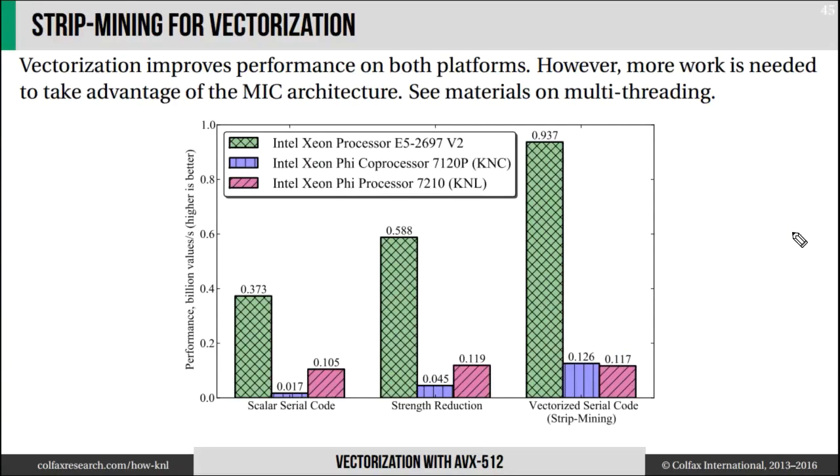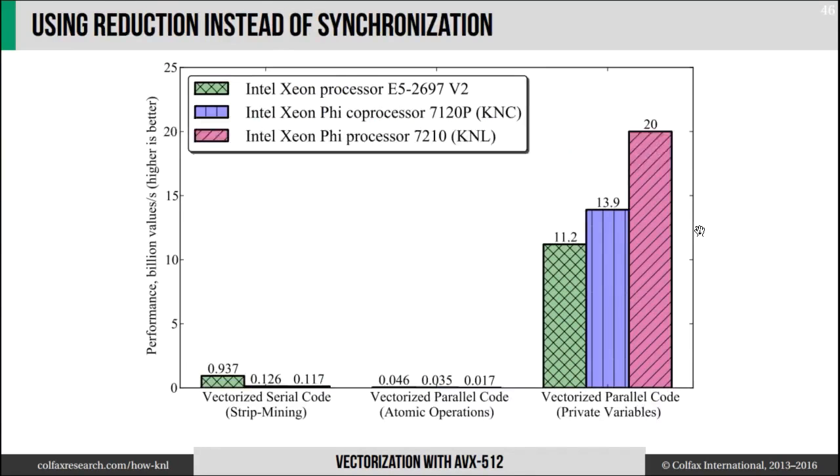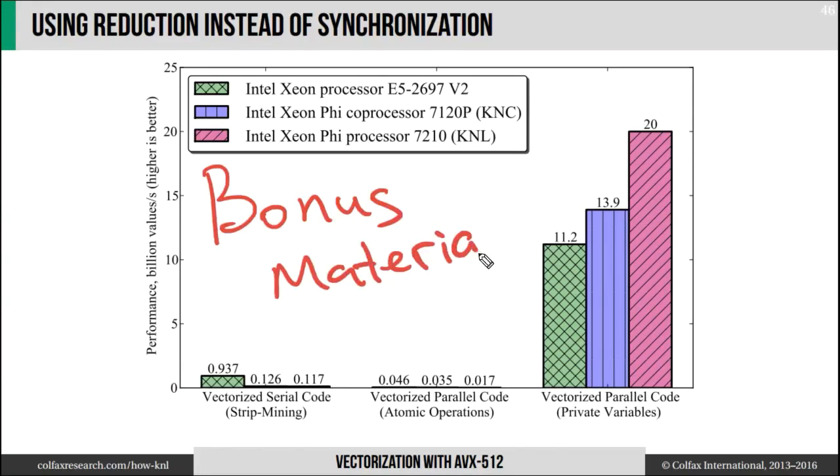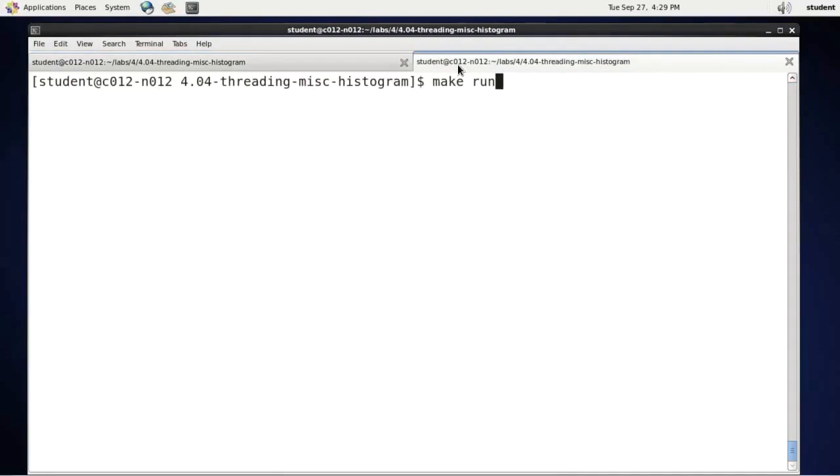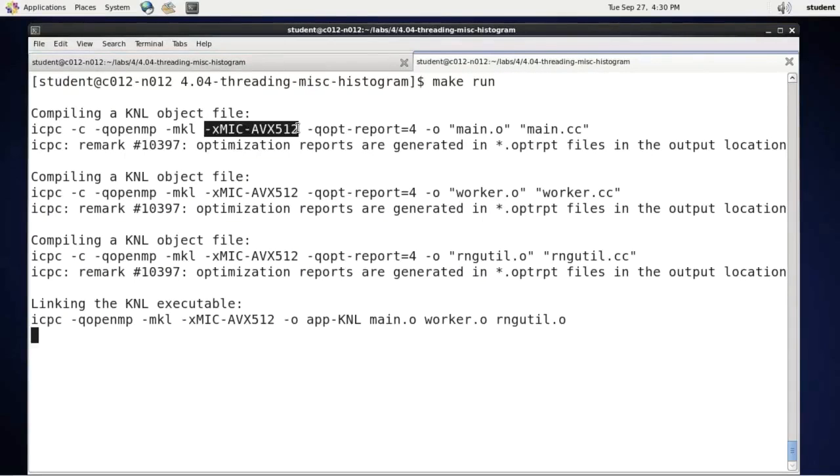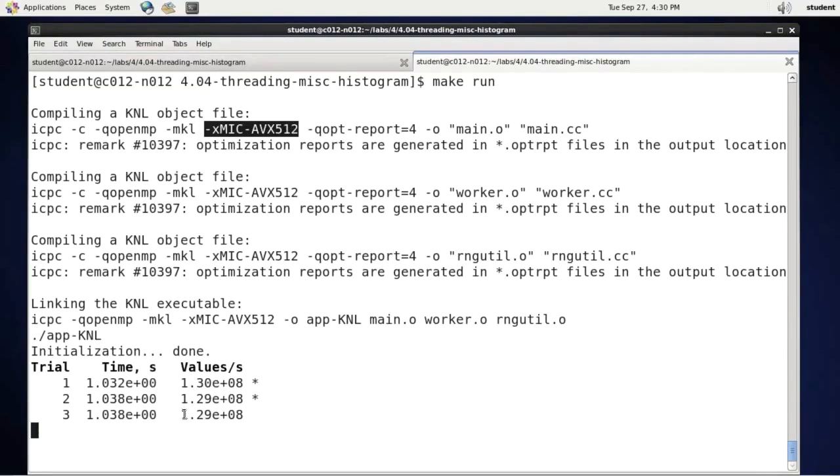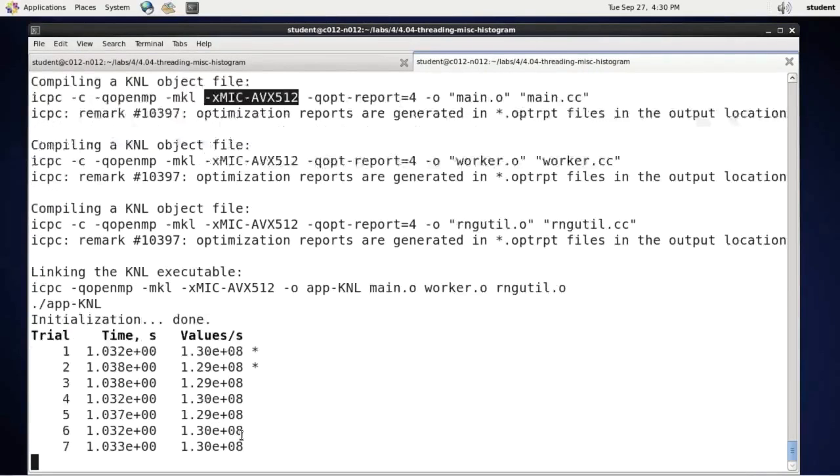So we have a single-threaded code that we wanted to parallelize across threads. I will show you how we are going to do this, but first let's establish the baseline. I'm going to run the code as we have it. It is going to be compiled with -xMIC-AVX512 so it's vectorized, and we see 1.2 times 10 to the 8 values binned per second. This code is only using one thread.